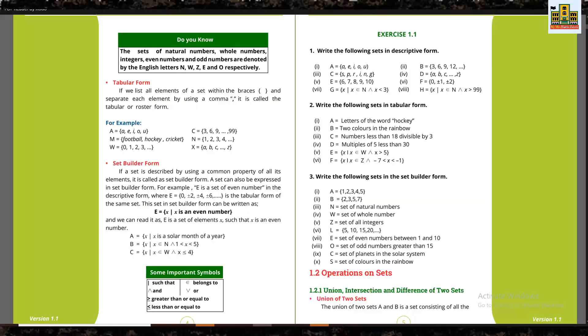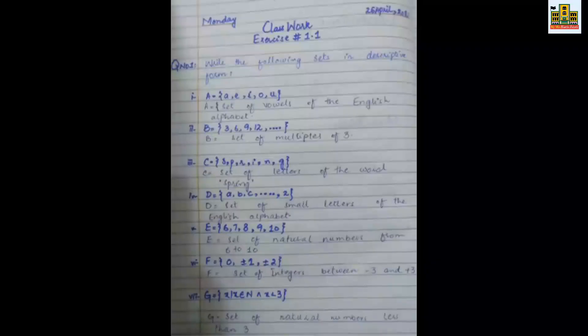You define in exercise number one we will start with the question: write the following sets in descriptive form. Firstly, you should know that you have descriptive form, actually, like we are describing something. Descriptive words. You have to describe this in words, like in statement form. What is given in question number one is a, e, i, o, u. You have to know that set of vowels.